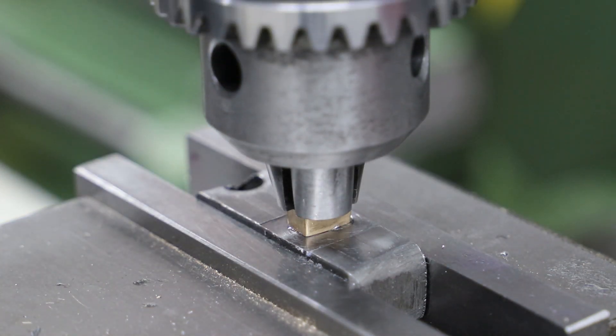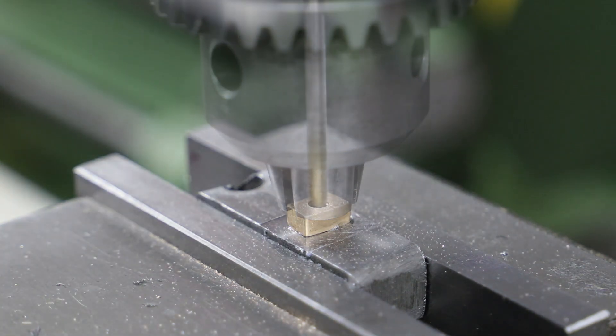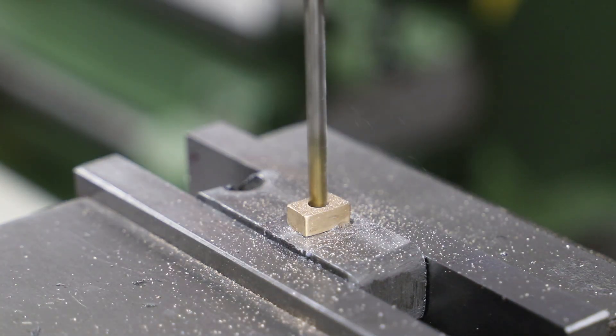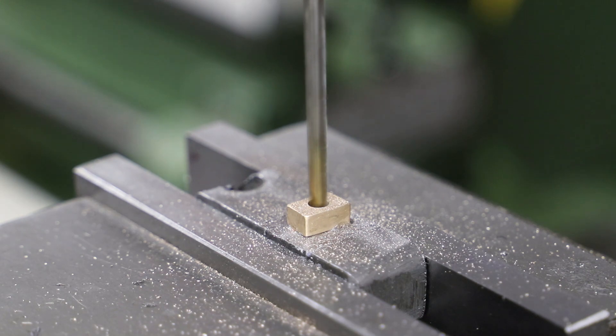And then to secure the die block in position, I use some Loctite. Once the Loctite has gone off, I use a series of drills to bring the hole out to 4mm.